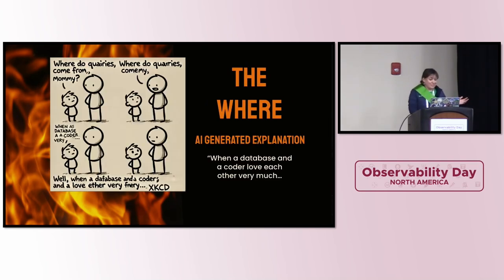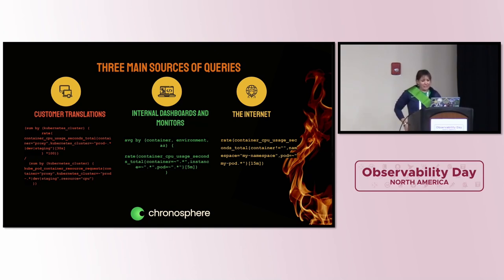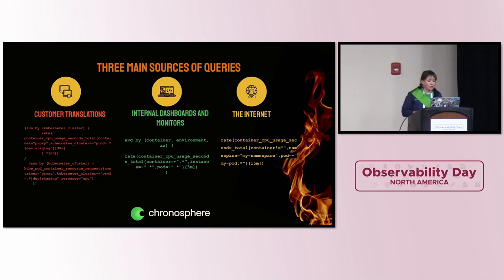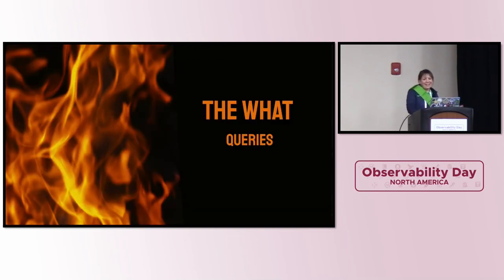As I was preparing my talk, I wanted to make a joke about where queries come from, but there wasn't one, so I asked AI to generate one — and it was pretty funny: when a database and a coder love each other very much... sometimes it does feel like that's where problem queries come from. But the real queries we're going to look at came from three main sources. Either these were direct customer translations — we had a translation tool that got the queries mostly there, but we were still checking a lot of them, making sure the queries they were using before still translated to Prom. We also have a ton of our internal dashboards and monitors — what we use at Chronosphere to monitor ourselves or provide out-of-the-box experiences. And then, of course, there is what is on the internet: canonical open-source Grafana dashboards, cAdvisor, node exporter queries.